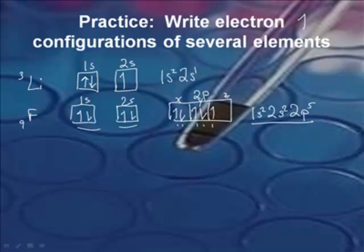So S's have one box, P's have three boxes, D's will have five, and F's have seven. 1, 3, 5, 7. Real simple.